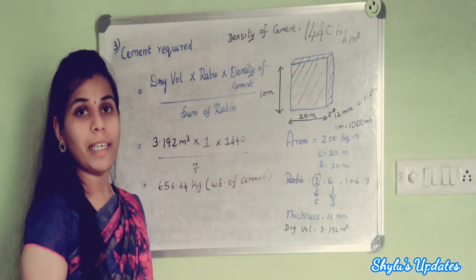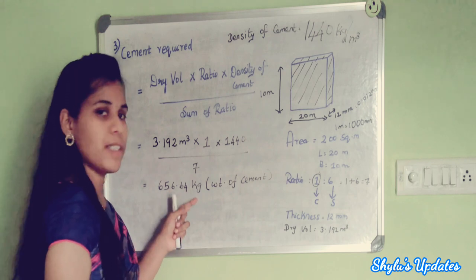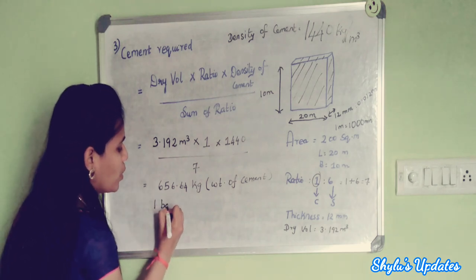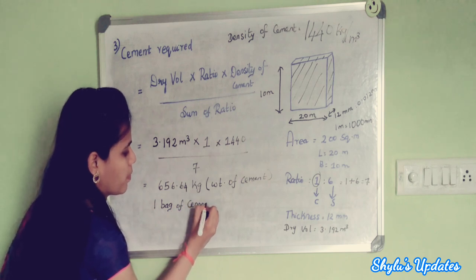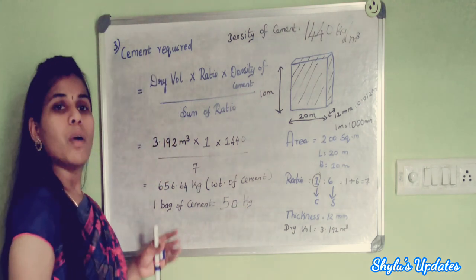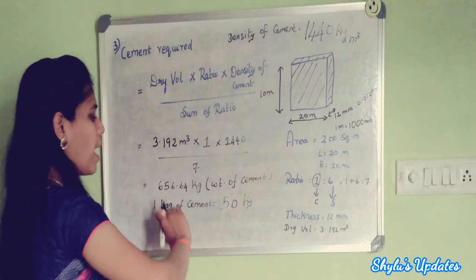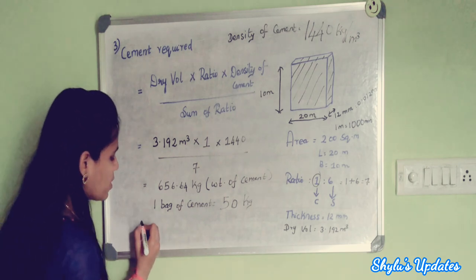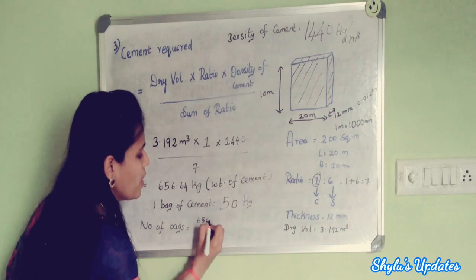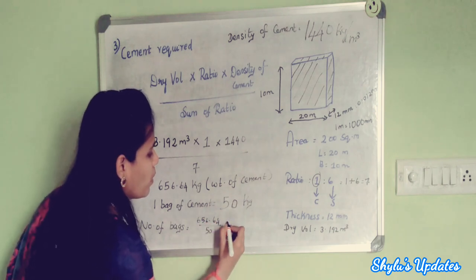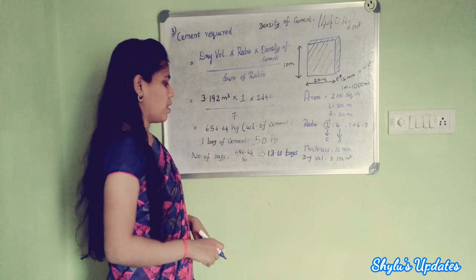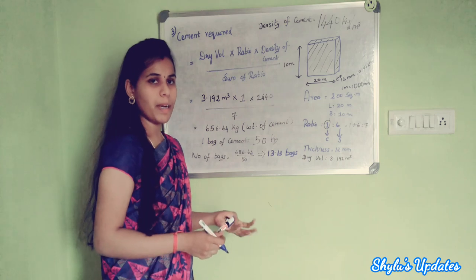We need the quantity of cement in bags. To convert cement from kg to bags, we divide by 50, since one bag of cement equals 50 kg. Number of bags equals 656.64 divided by 50, which gives 13.13. So the quantity of cement is approximately 13 bags.